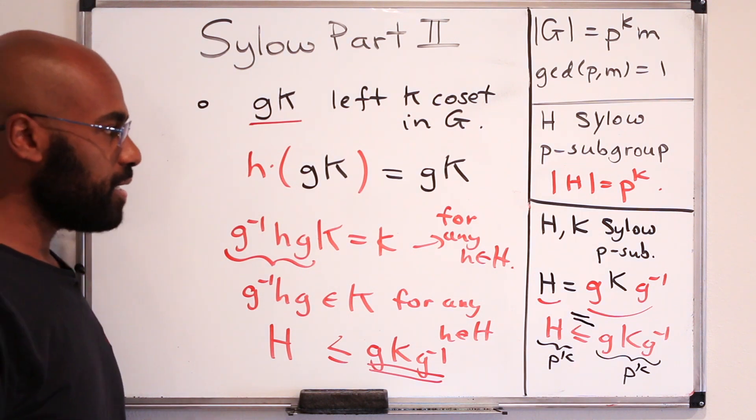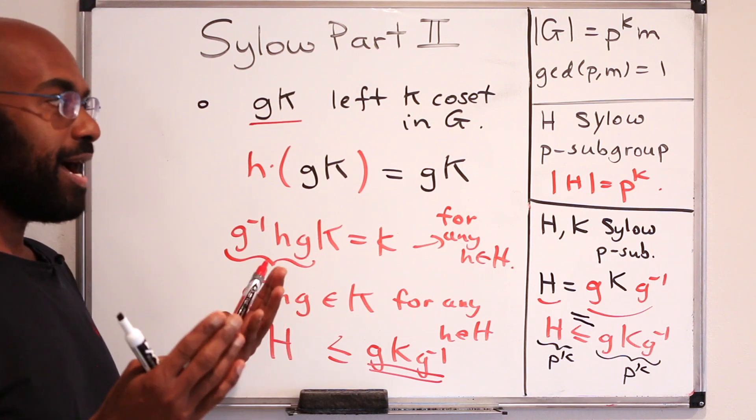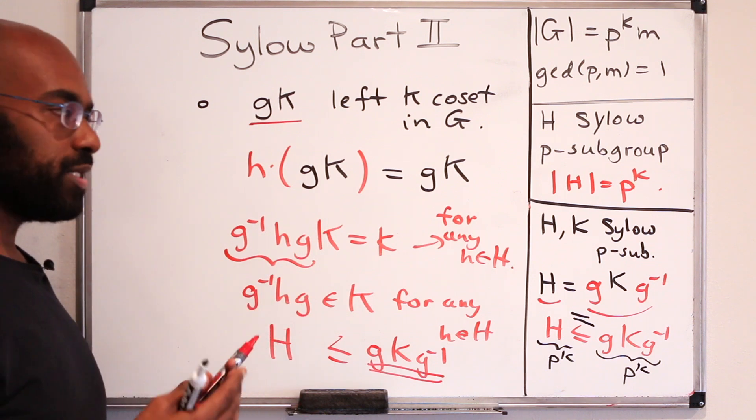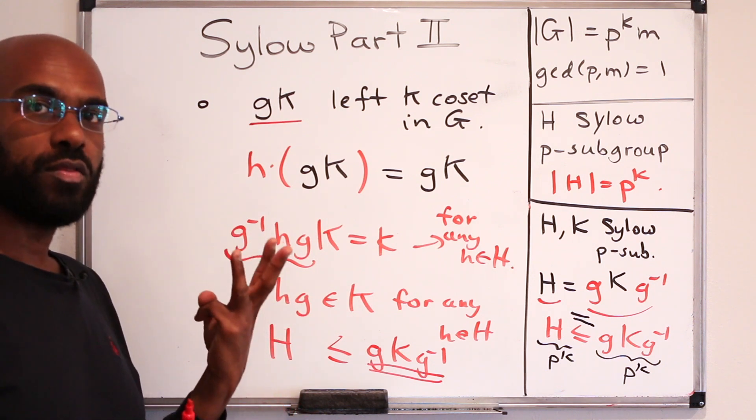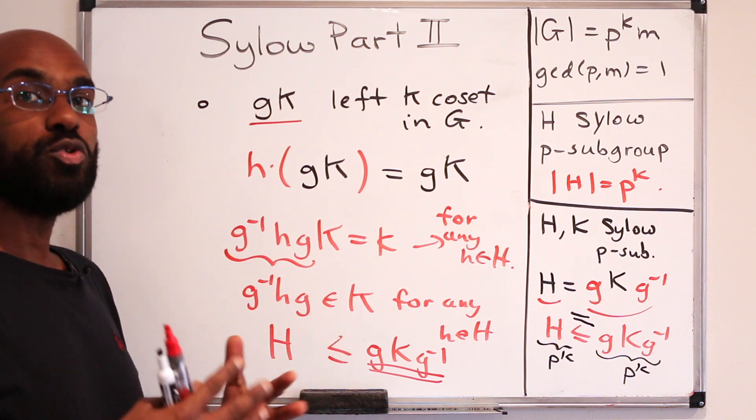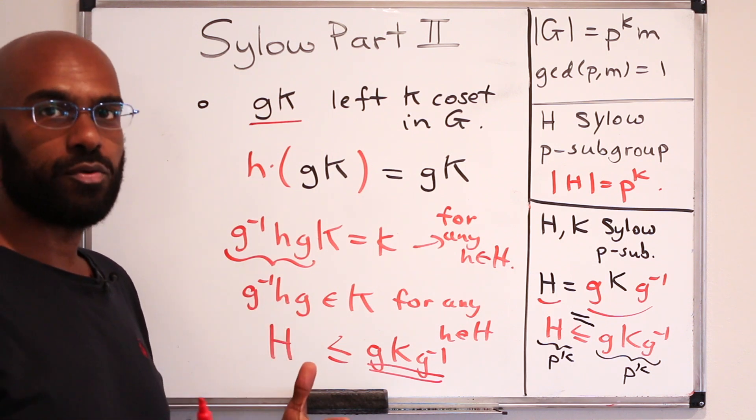Very cool. So a nice way to see that if you have two Sylow-P subgroups, then they have to actually be conjugate to each other. And as a nice consequence, they're actually isomorphic to each other. In the next video, we're going to look at the third part of the Sylow theorem, which actually gives you a way of deducing conditions on the number of Sylow-P subgroups in general.